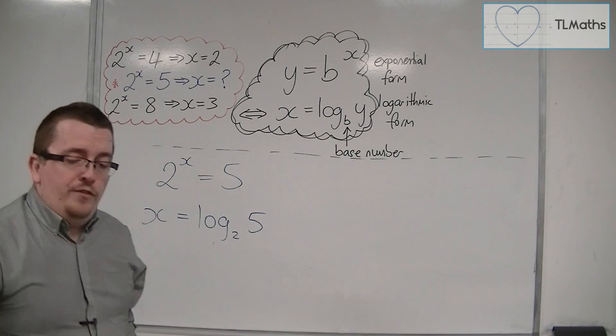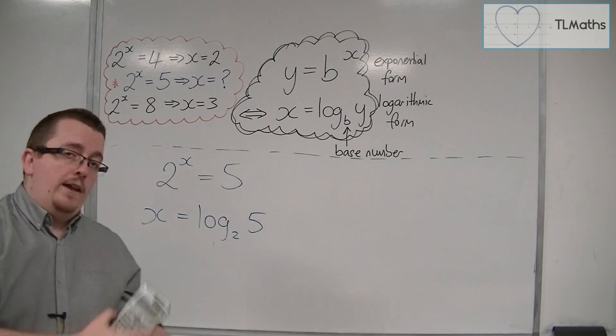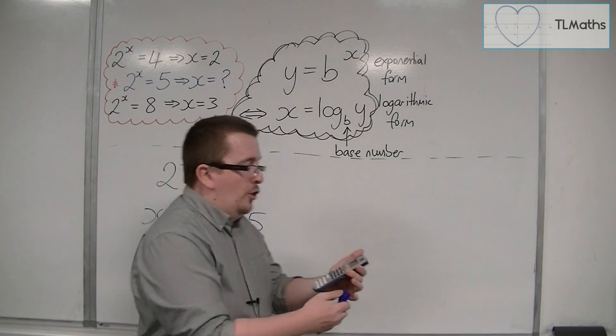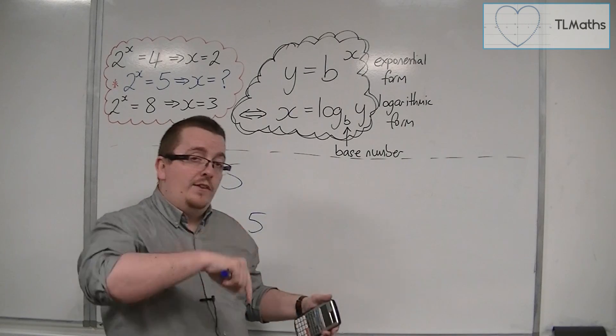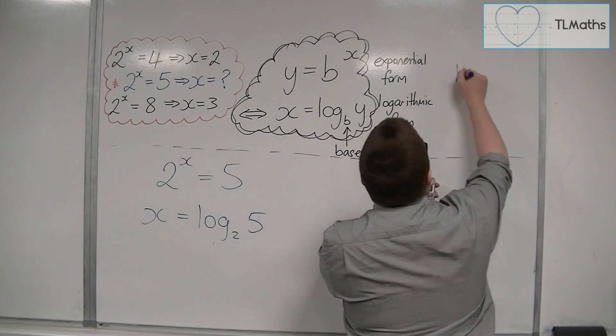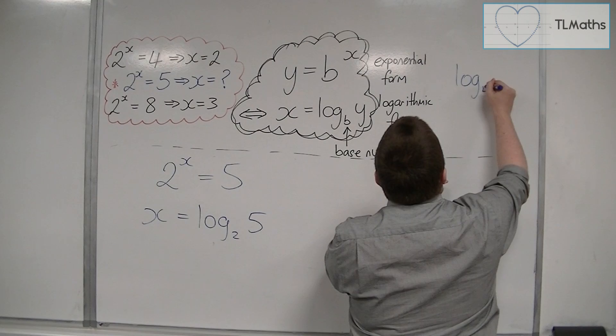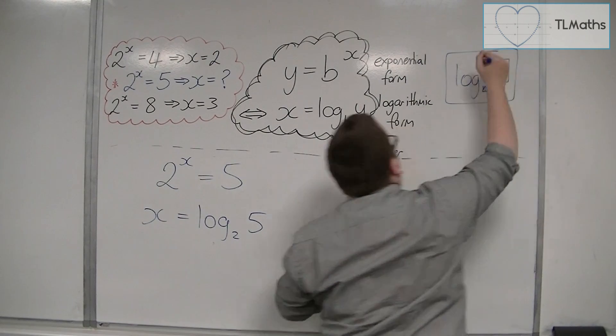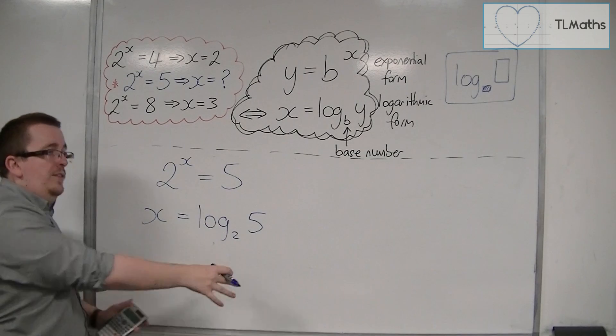Now if you have one of the Casios or another calculator that has the log button that has the change of base, so the one that looks like this, if you have that button, then you can type this in directly.